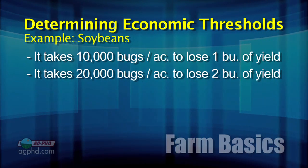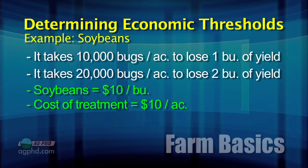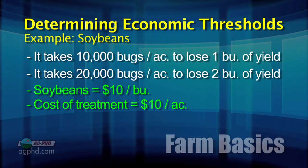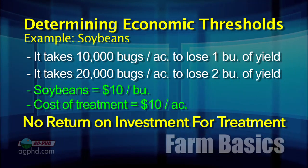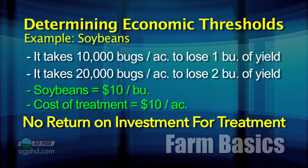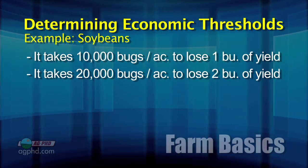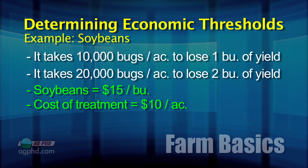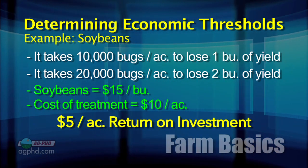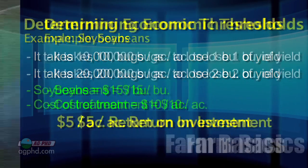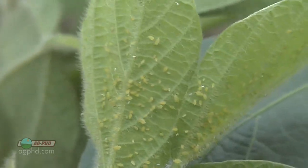For example, let's say in an acre it takes 10,000 bugs to cause one bushel yield loss and 20,000 bugs to cause two bushel yield loss for soybeans worth $10 a bushel. If the cost of treatment is $10, spending $10 to gain $10 doesn't make sense. But if I can gain $15 at a $10 cost, that's pretty good. So my economic threshold is that $10 cost, which might correspond to 10,000 bugs in the field.